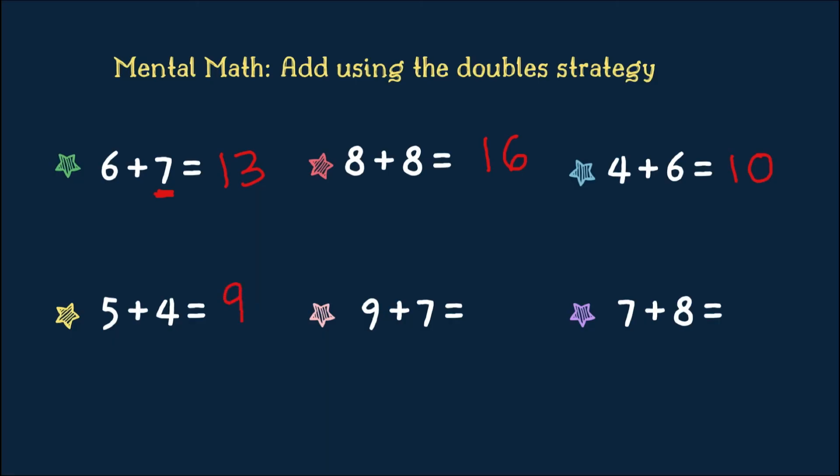9 plus 7. Okay. Are you a little stuck? Let's split it quickly. We'll split this 9 into 7 and 2. So, what's double 7? 14. 14 plus 2 gives you 16.